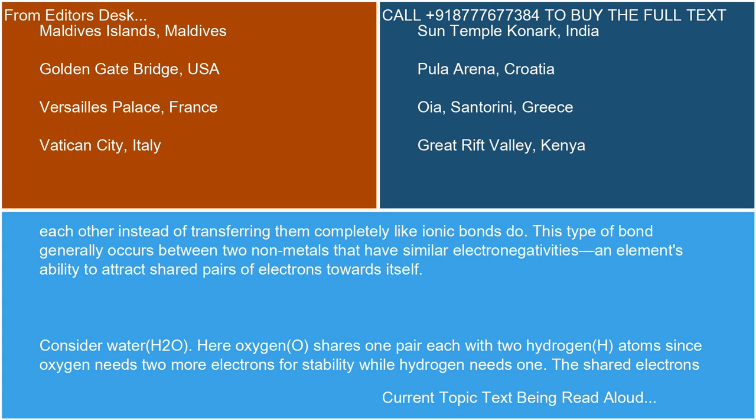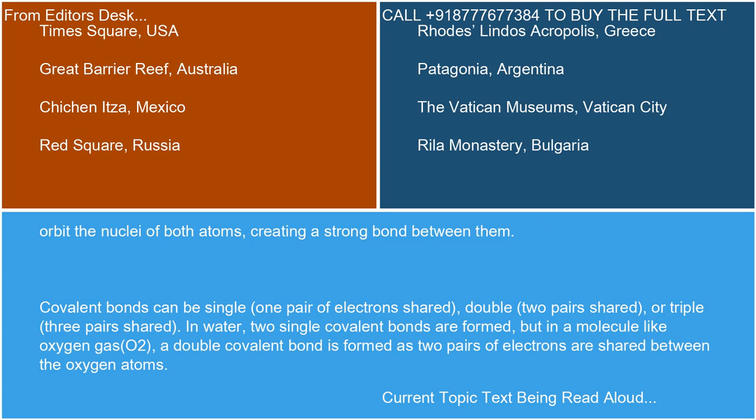Consider water (H2O). Oxygen (O) shares one pair each with two hydrogen (H) atoms, since oxygen needs two more electrons for stability while hydrogen needs one. The shared electrons orbit the nuclei of both atoms, creating a strong bond between them.